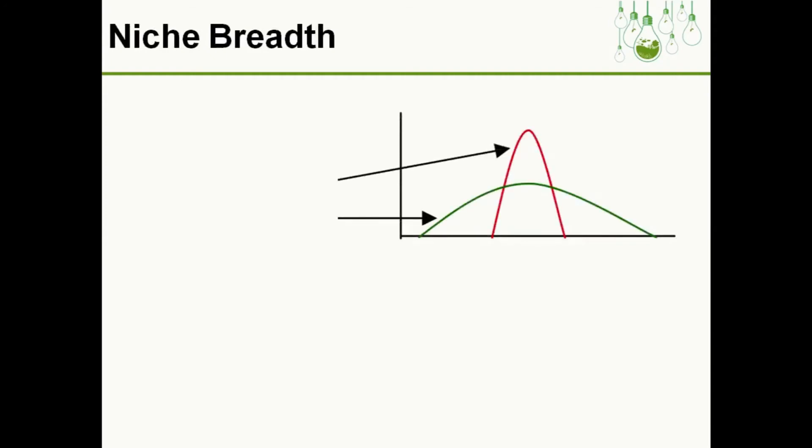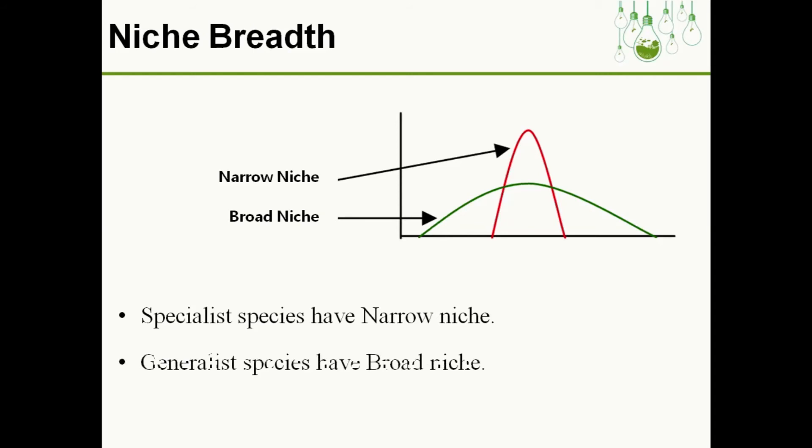Niche breadth is of two types: narrow niche and broad niche. Narrow niche is for specialist species, whereas broad niche is for generalist species. Species which can feed on only specialized kinds of diet have a narrow niche because they depend on certain sets of food types. Generalist species depend on a wide range of food, so their niche is broad.